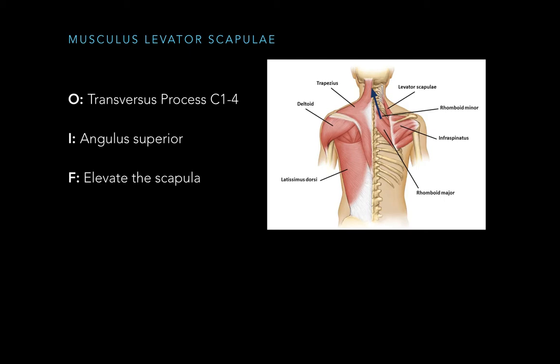The next muscle of the second layer is musculus levator scapula. It originates at the transverse process of C1 to C4 and inserts at the angulus superior. Its function is to elevate the scapula, as you see in this arrow.